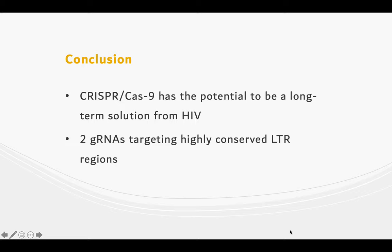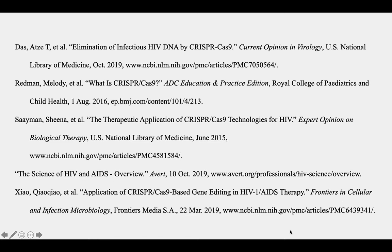In conclusion, the CRISPR system has the potential to be a long-term solution to HIV. The progress so far has the system using two guide RNAs cleaving highly conserved regions of the viral DNA for destructive assurance. For more information, you can check out the reviews listed here, and if there are any questions, be sure to leave them in the comments. Thank you!